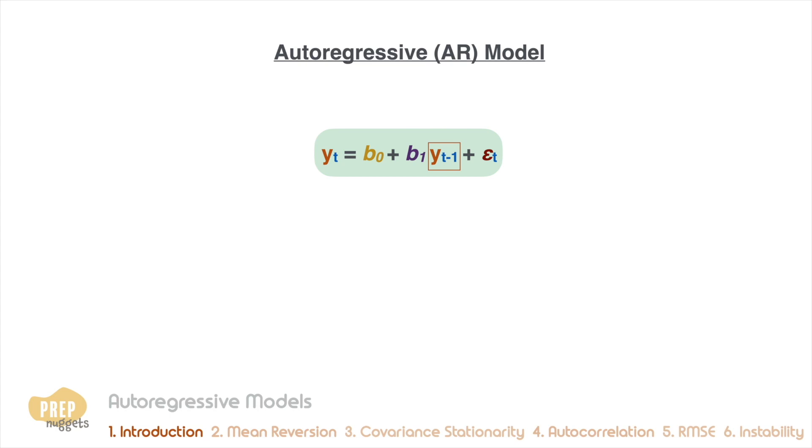If the AR model only regresses on itself with a lag of one period, we call this a first-order autoregressive model, or AR(1) model.